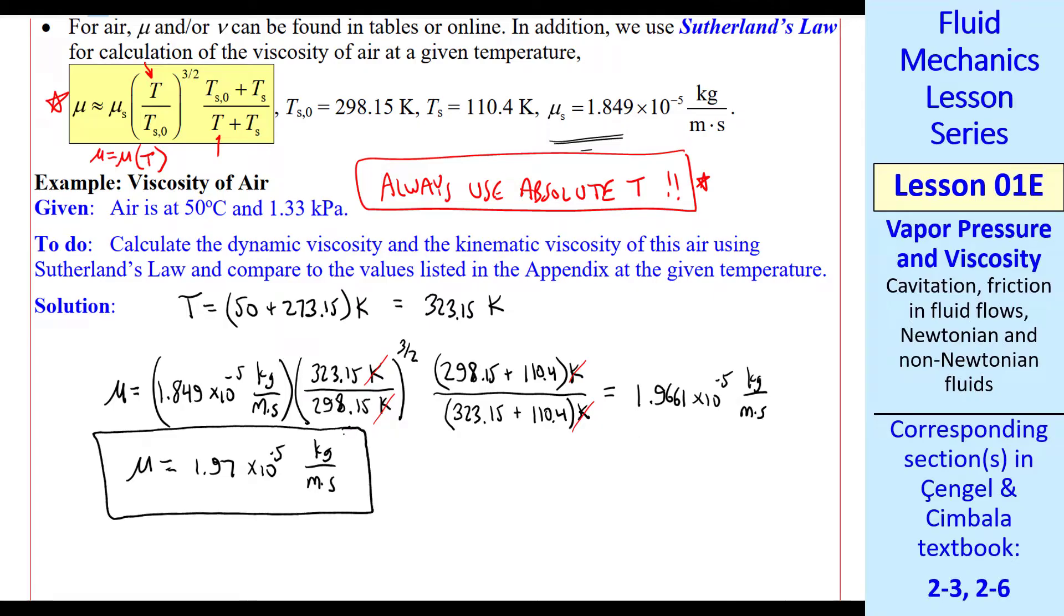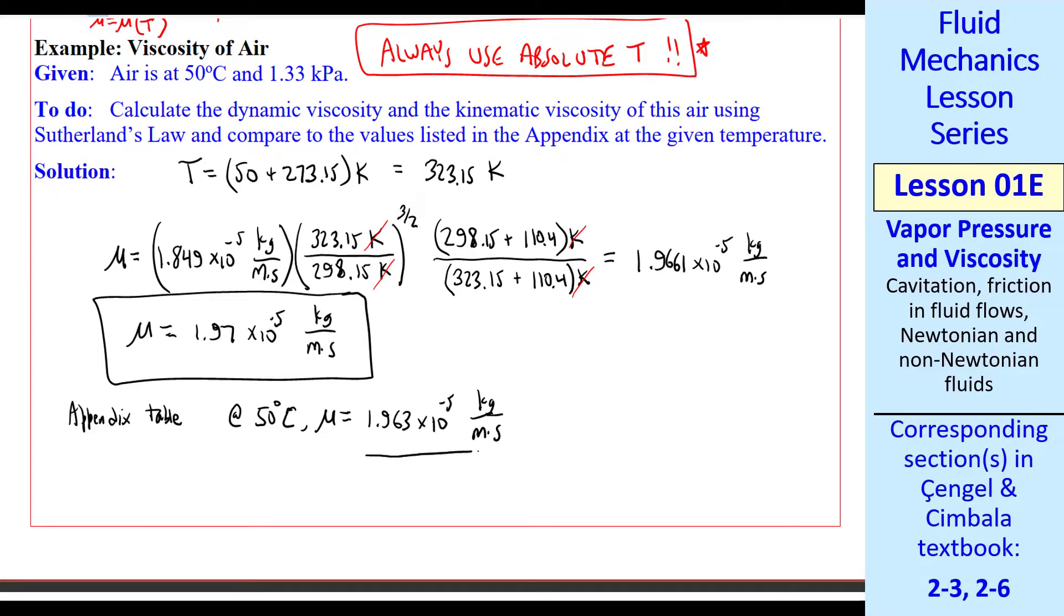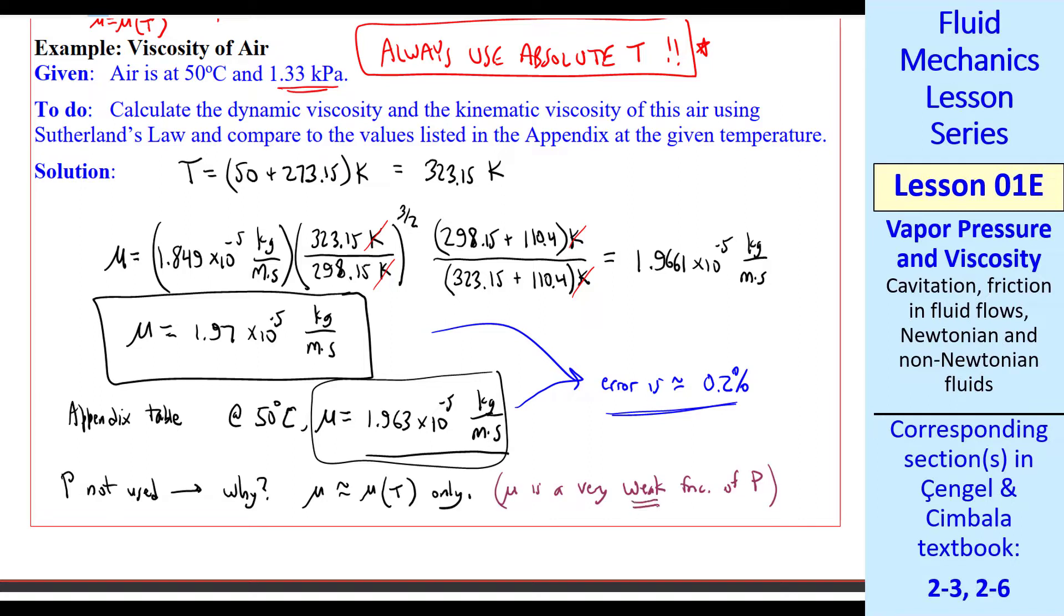From a table in the appendix, at 50 degrees C, mu is given as 1.963 times 10 to the minus 5 kilograms per meter second. Comparing these two, the error is about 0.2%, which is excellent. Notice that this P was never used, 1.33 kPa. Why? It's because viscosity is approximately a function of T only. Mu is a very weak function of pressure.